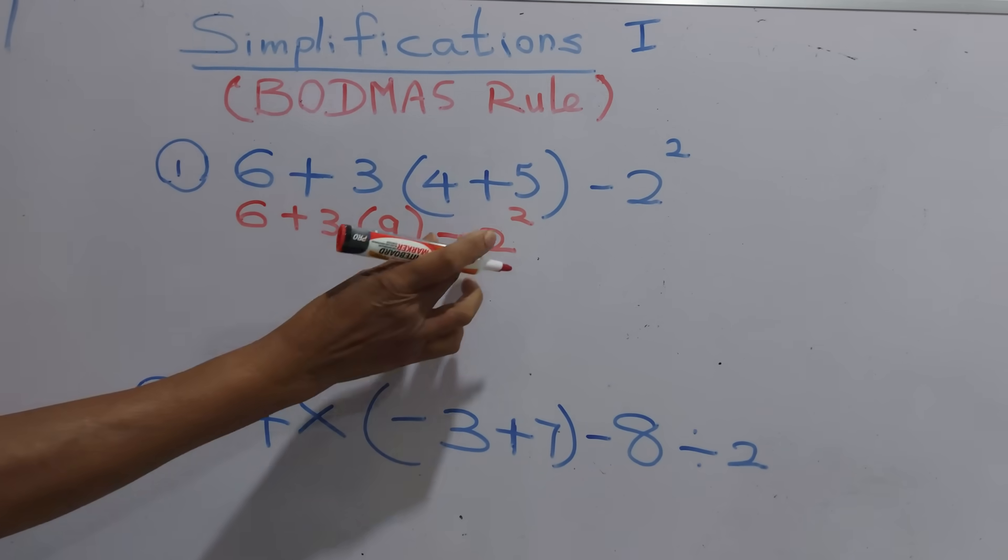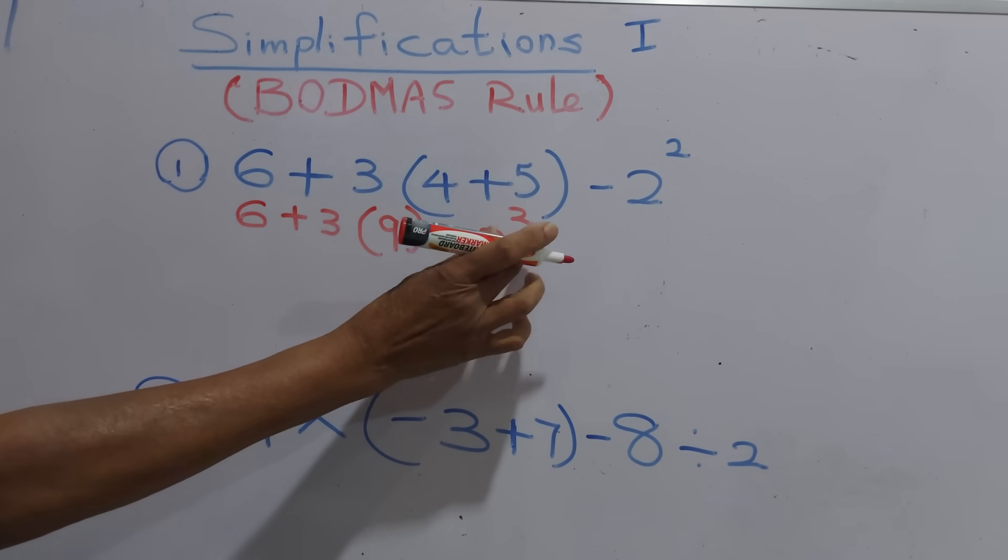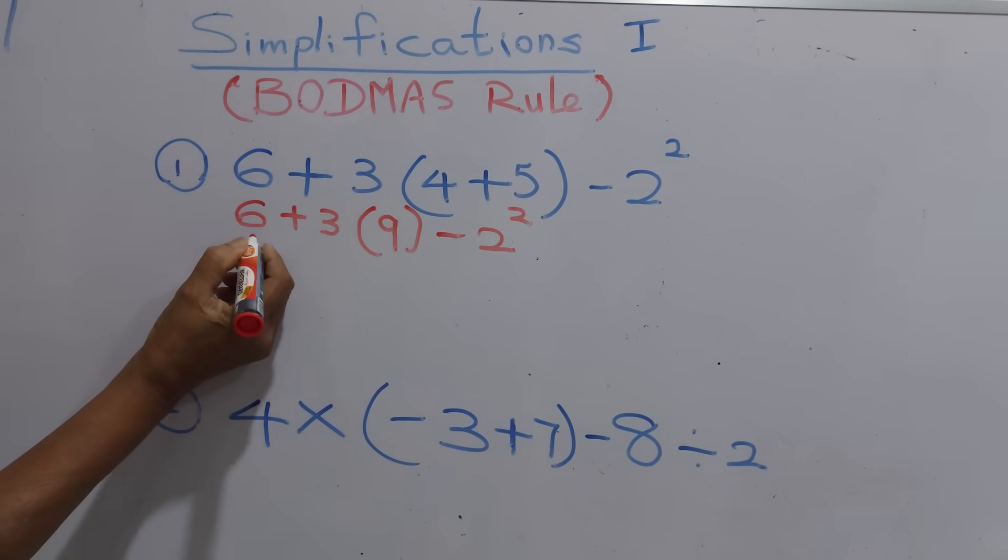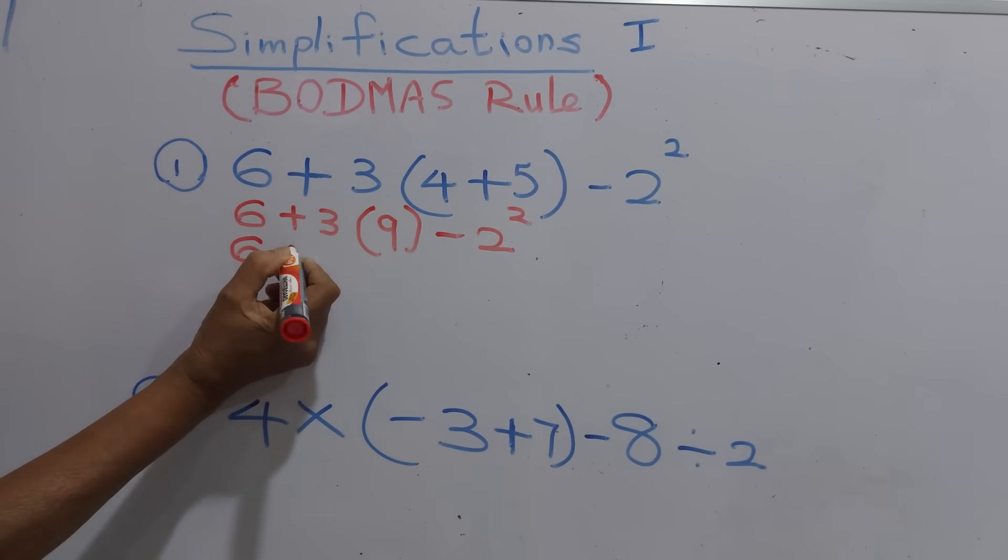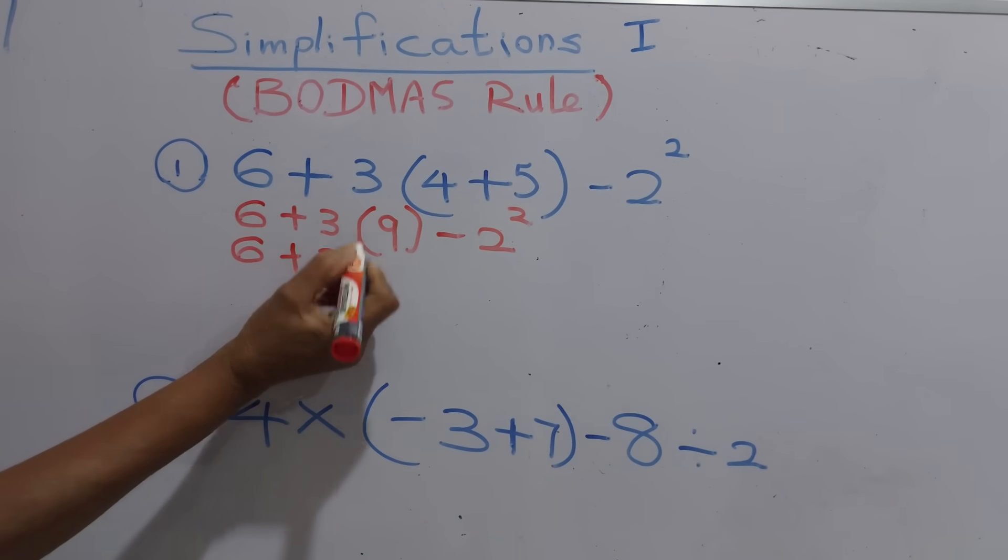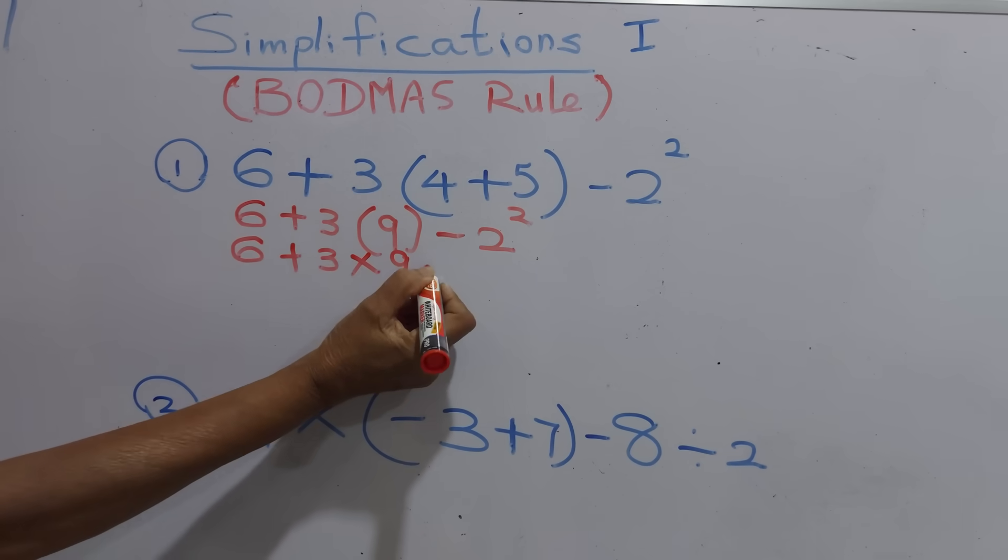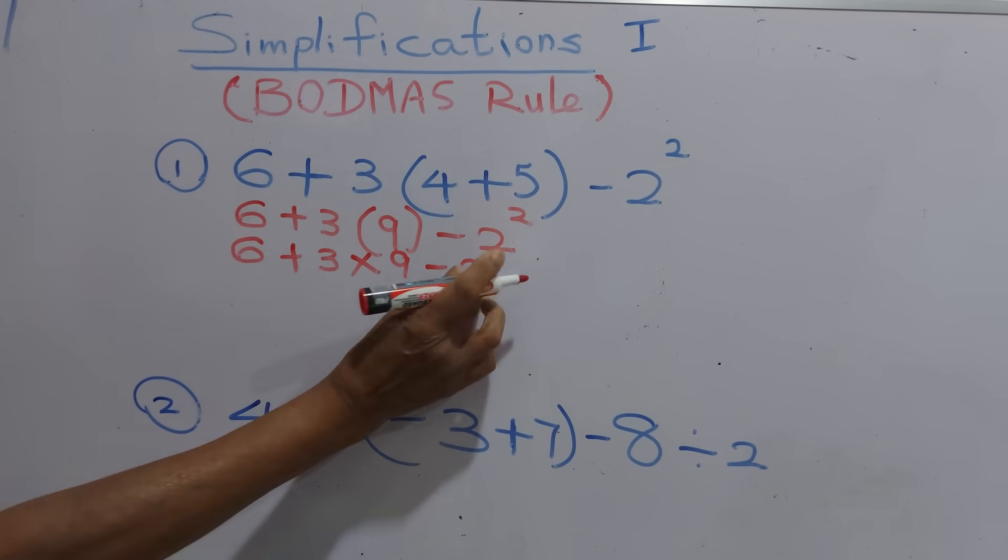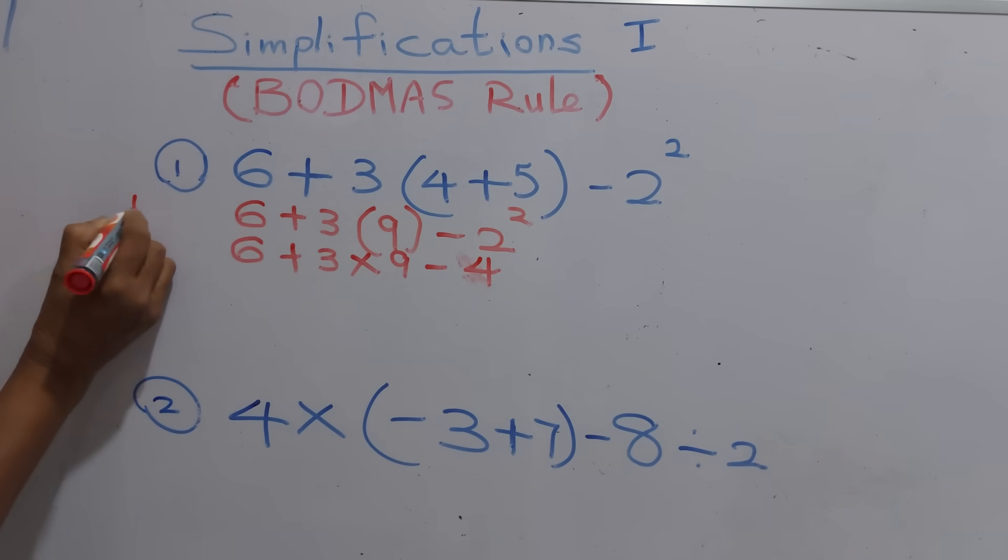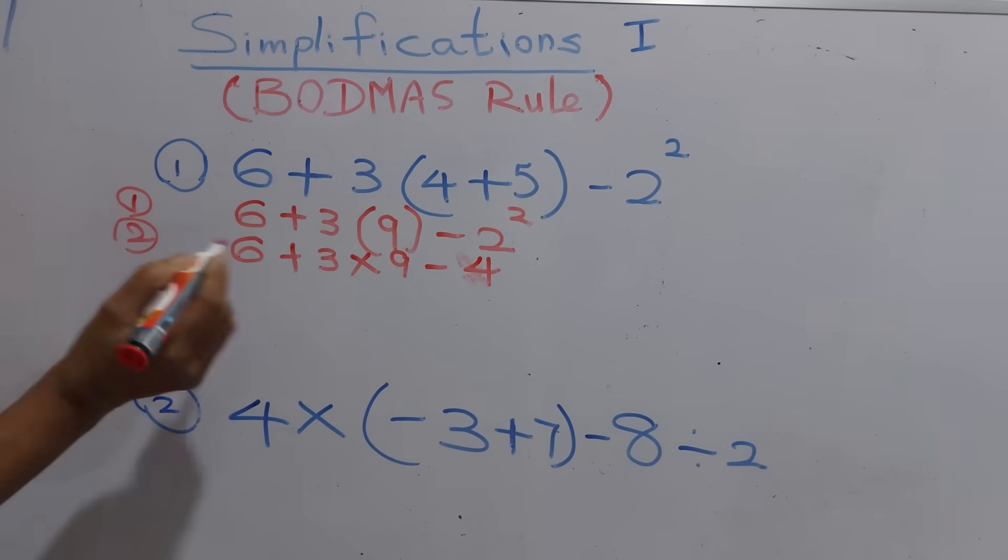The second step is O, order. We have to simplify 2 square. The second step is 6 plus 3, that is multiplication, 9 subtraction 2 squared, that means 2 into 2, which is 4. This is the second step.